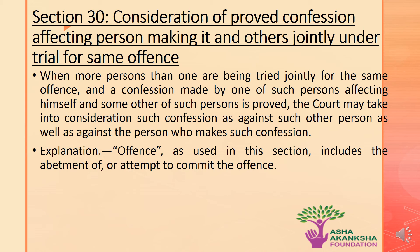Let us understand Section 30. Section 30 states: consideration of proved confession affecting person making it and others jointly under trial for the same offence. When more persons than one are being tried jointly for the same offence and a confession made by one such person affects himself and some other of such persons is proved, the court may take into consideration such confession against such other persons as well. The explanation states that 'offence' includes the abetment of or attempt to commit the offence. Basically, if one co-accused makes a confession regarding any prohibited act, it becomes a confession against the other co-accused as well.